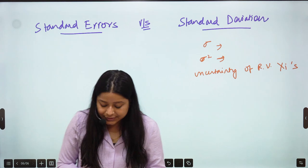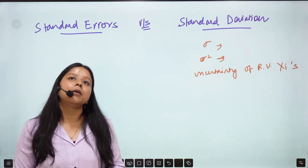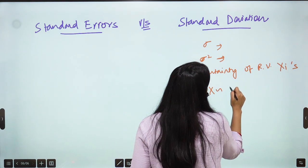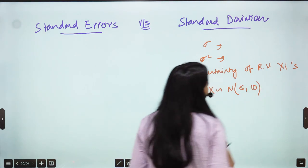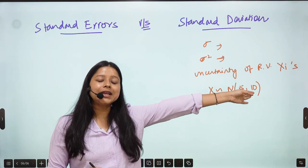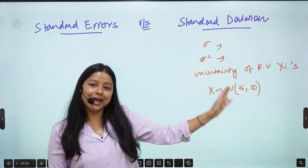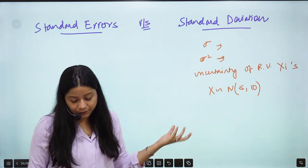Yes, this is your, for example if I say that your x follows normal 5, 10. What is your variance? 10. Uncertainty in the xi's, random variable xi. This is your Standard Deviation.